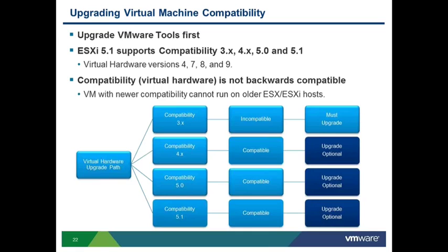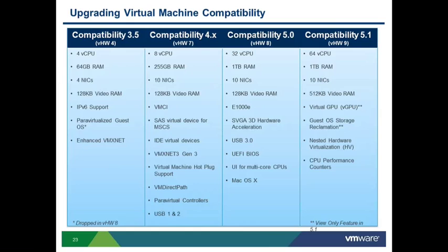Virtual hardware version is not backwards compatible, however — so you should wait right to the end until you're ready. The reason you would upgrade to VM compatibility 5.1 is to get features like guest OS storage reclamation, 64 vCPUs, and other additional capabilities that are part of new virtual machines in this compatibility range. There's no real downside to doing this — the only downside is not having everything standardised on the current version and potentially missing out on some of these features.